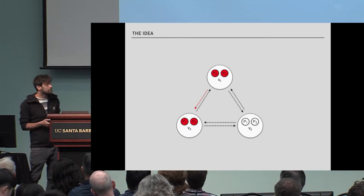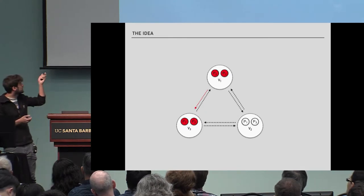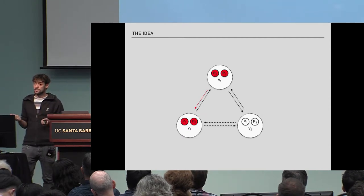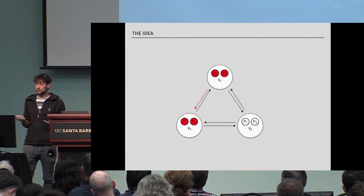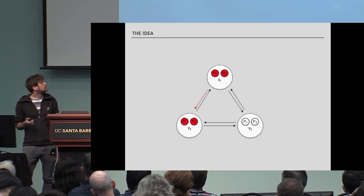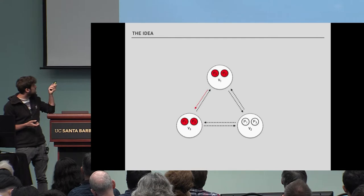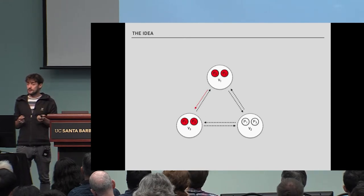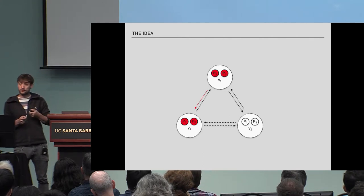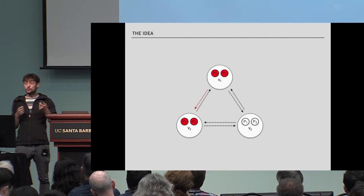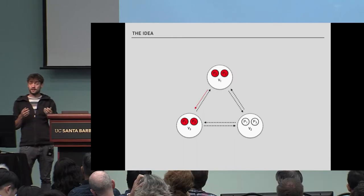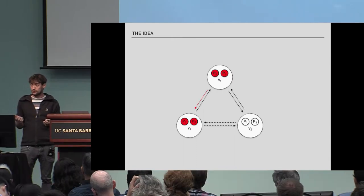The question is what we need from the semi-honestly secure protocol in terms of security guarantees. Every real party participates in the simulation of two virtual parties. So if I corrupt one real party, I corrupt two virtual parties. That means the underlying semi-honestly secure protocol needs to be secure against two semi-honest corruptions.